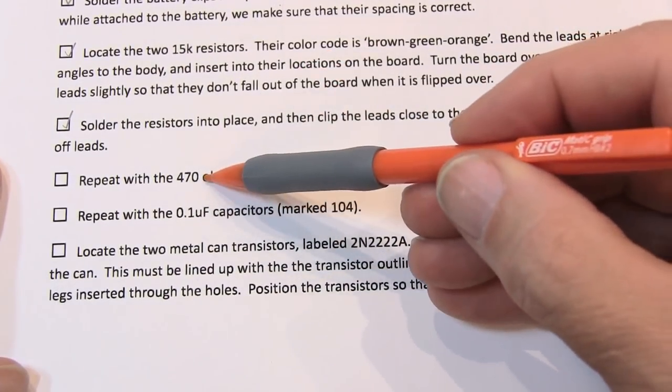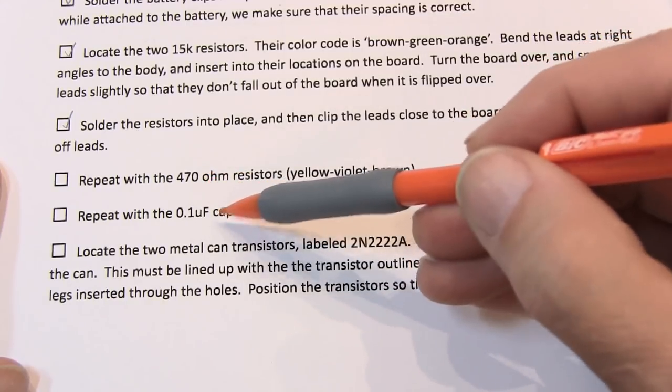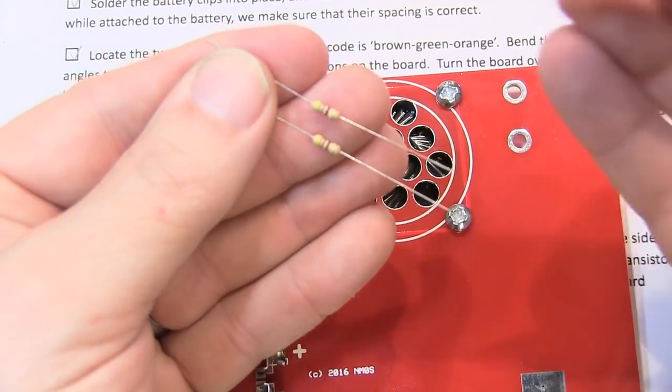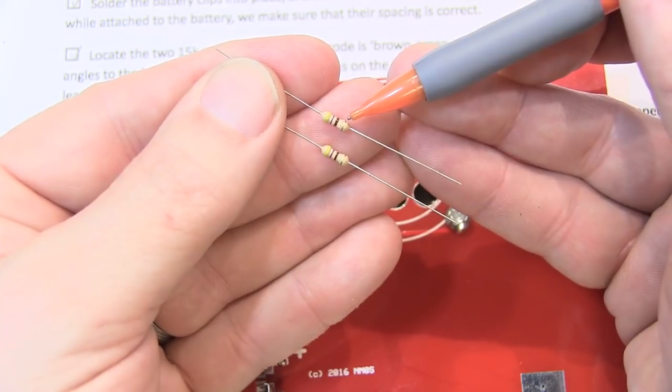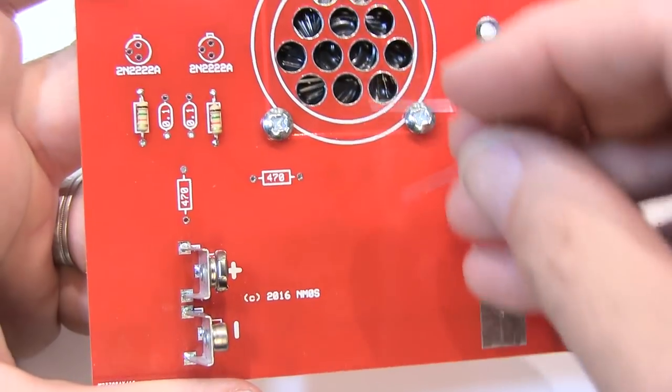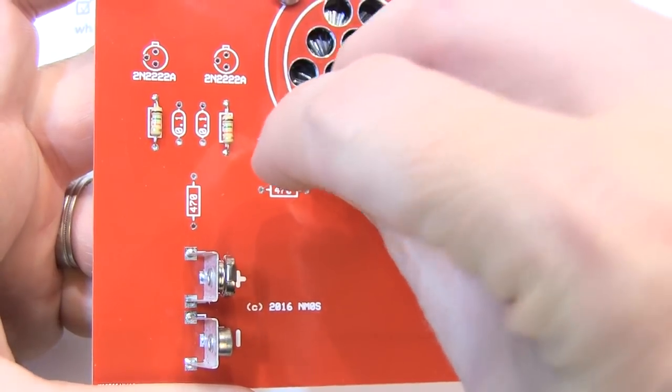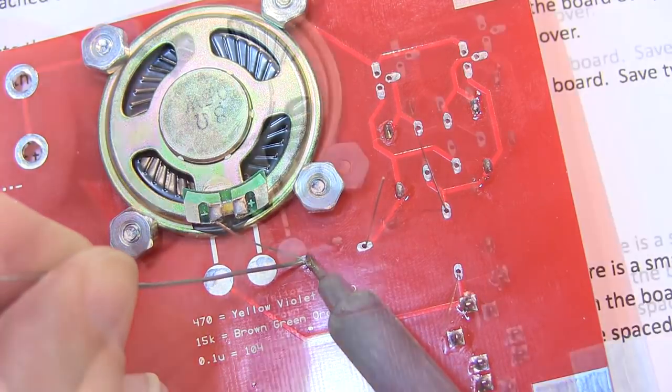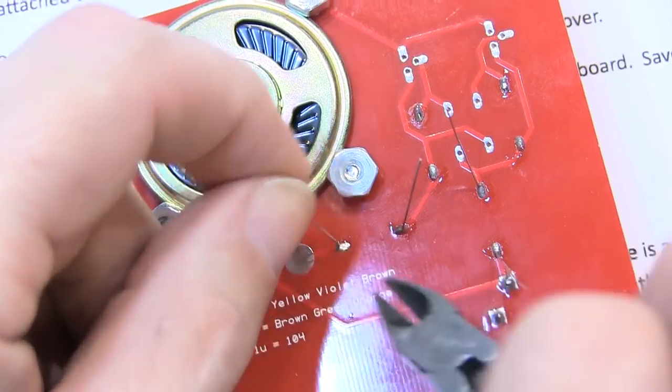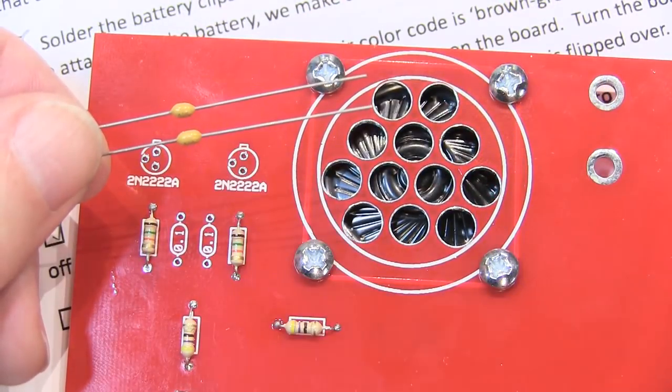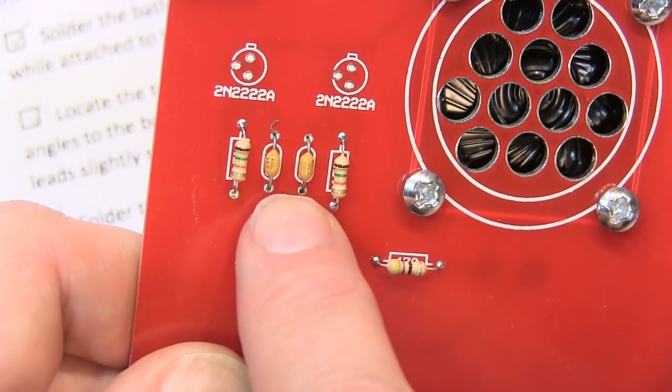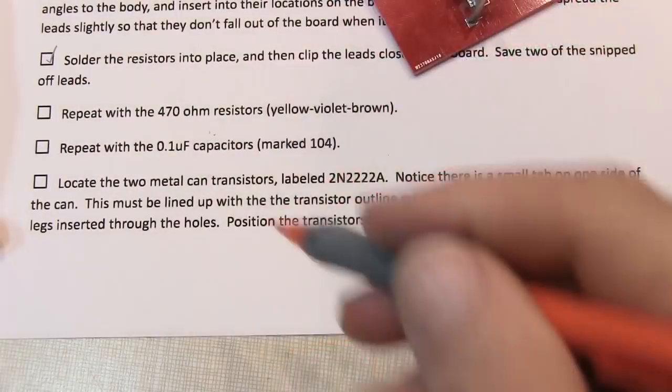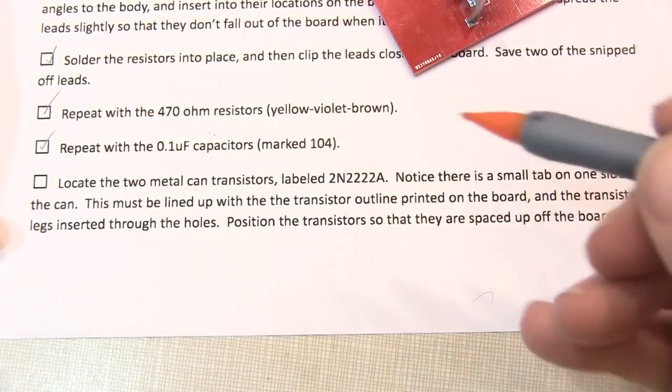Okay so the 15k resistors are installed and soldered and we've clipped the leads off. We're going to repeat the same process with the two 470 ohm resistors and the 0.1 microfarad or 104 capacitors. The 470 ohm resistors are the ones with the yellow, violet, brown, and gold bands. And we'll insert them in the board in the 470 ohm resistor locations. And we'll solder them in place. And trim off each of the leads. Follow the same process for the two capacitors.